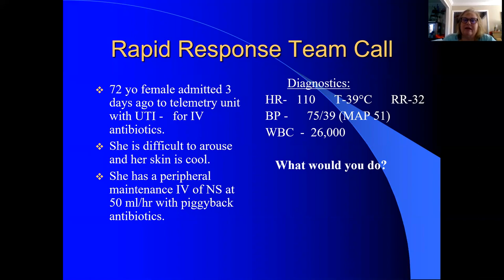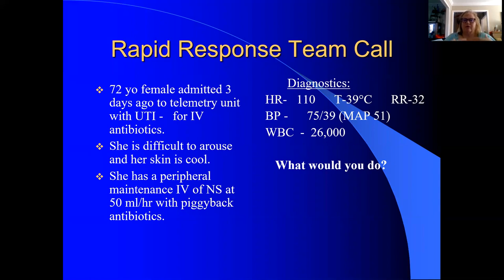Her temperature is 39. I like to put vitals in the correct order: temp of 39, heart rate of 110. That can be a compensatory tachycardia — a high temperature can lead to a compensatory tachycardia, not the other way around. We've also got a high respiratory rate; 32 is really high. And a blood pressure of 75 over 39 — she is hypotensive, dramatically hypotensive.